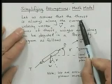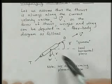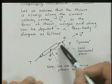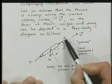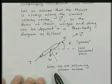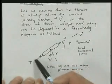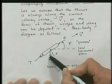We'll assume that the thrust is always along the current velocity vector V, so that the forces of thrust, weight, and drag can be depicted as in this free body diagram. So here we have the rocket. Here's the current velocity vector. The drag is always in the opposite direction of the velocity, so there's a drag force. The thrust is, we're assuming, along the velocity direction, although that is not always the case in real systems. And then we have the weight here.